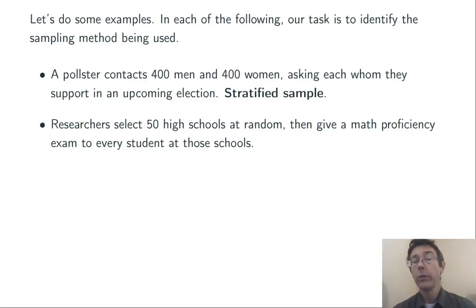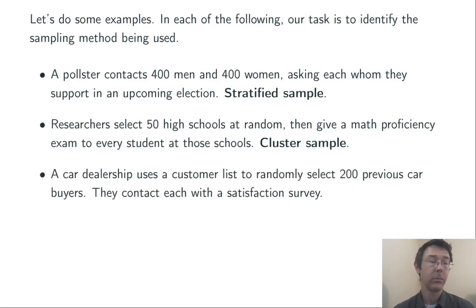Number two, researchers select 50 high schools at random, then give a math proficiency exam to every student at those schools. This is an example of a cluster sample. The randomization has taken place between the groups. And then once we've selected those groups, we've done a census within each one of the selected groups.